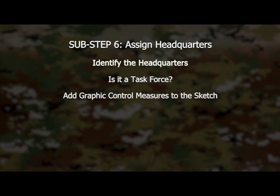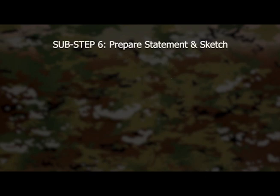Add graphic control measures to the COA sketch, usually boundaries between the subordinate headquarters one level down. Sub-step 6: repair the statement and sketch.